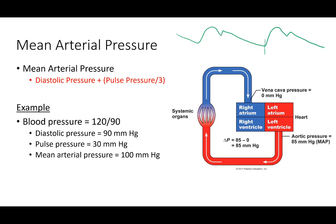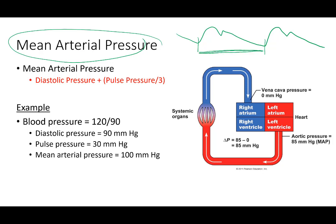Mean arterial pressure is the average pressure over one heartbeat. Because more time is spent in diastole, the formula is: MAP = diastolic pressure + (pulse pressure / 3). Using systolic 120 and diastolic 90, pulse pressure is 30, so MAP = 90 + (30/3) = 90 + 10 = 100 mmHg.